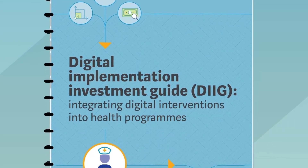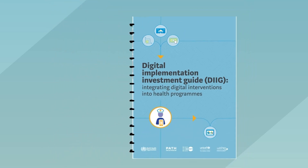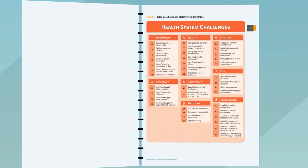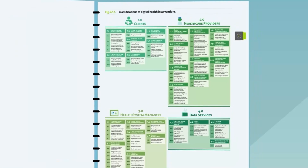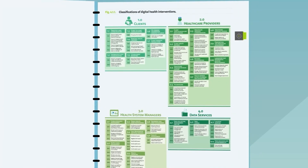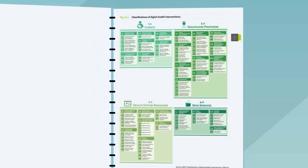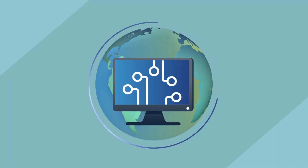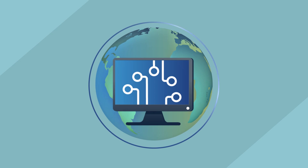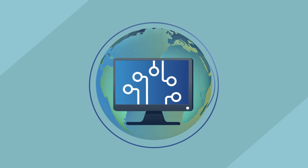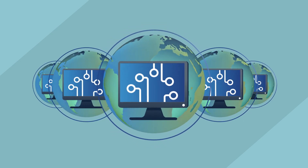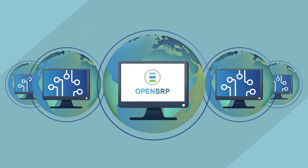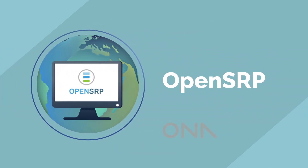The WHO classification framework in the Digital Implementation Investment Guide has identified 39 potential health system challenges and over 80 specific ways that digital tools can improve health services. These interventions are parceled in a variety of digital health global goods. Each video in this series will highlight a specific global good. This video will feature OpenSRP, developed by ONA.